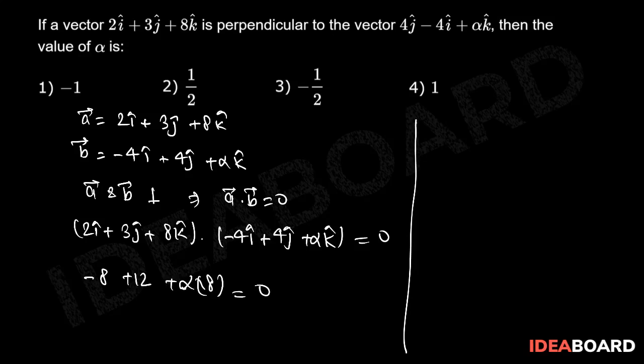Or we can write that 8 alpha should be equal to minus 4 or alpha is equal to minus 1 by 2. Therefore, option number 3 is the correct answer of this problem.